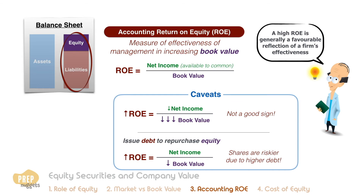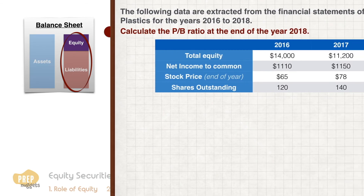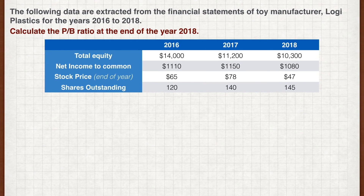Let's practice with some numbers. The following data are extracted from the financial statements of toy manufacturer Logi Plastics for the years 2016 to 2018. Calculate the PB ratio at the end of the year 2018.